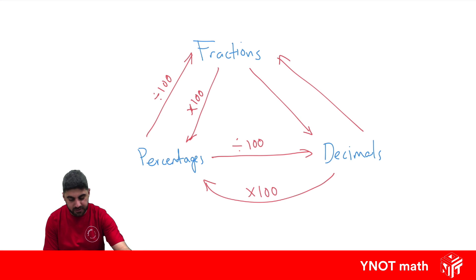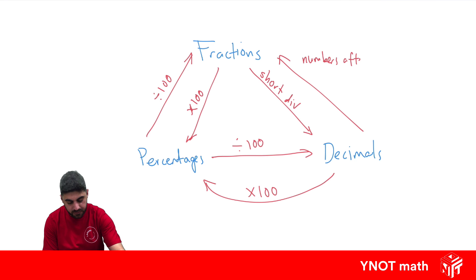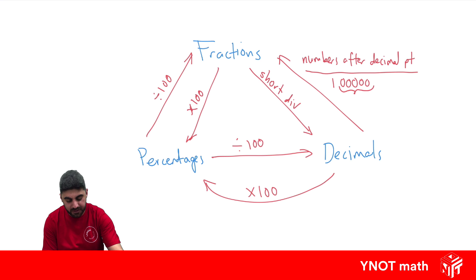To go from a fraction to a decimal, we're going to do short division. And to go from a decimal to a fraction, we're going to take all the numbers after the decimal point and put it over a 1. The amount of zeros we need is dependent on how many numbers are after the decimal point, which will hopefully make sense with an example.